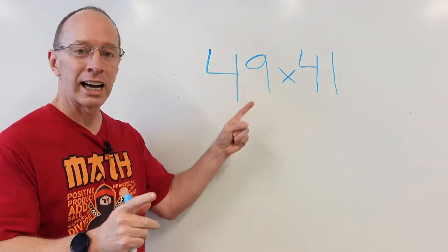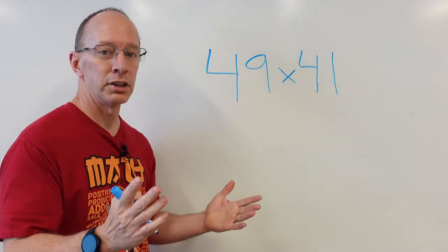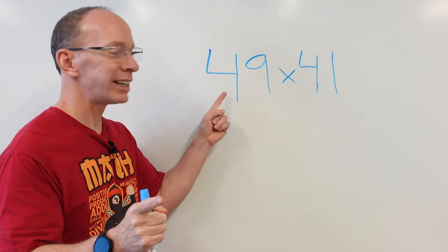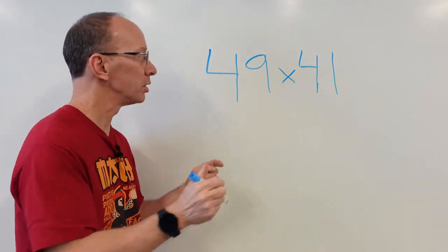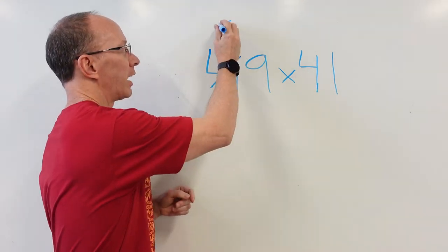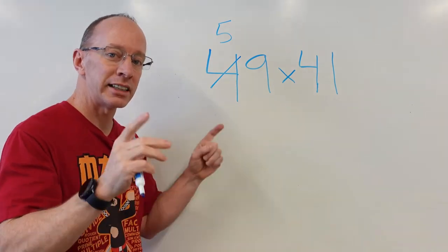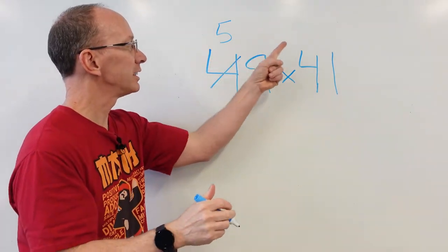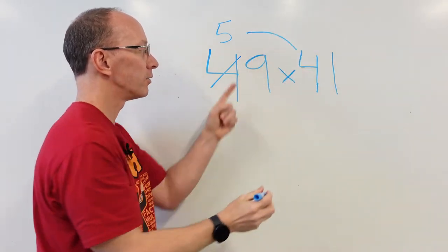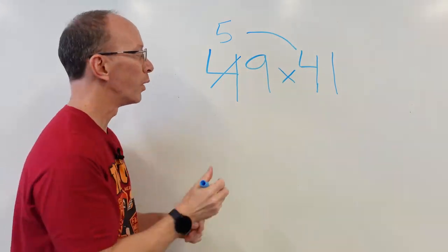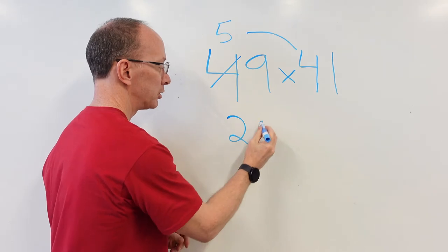Got forty-nine times forty-one. Ready to do it? Yeah! Let's do it. So, I take the four. I add one more to it. That will be five. Multiply the numbers in the tens place. Five times four right here. Five times four is twenty. So, you put a twenty right here.